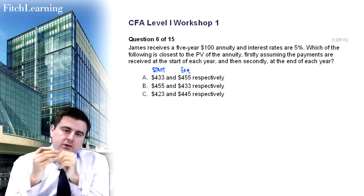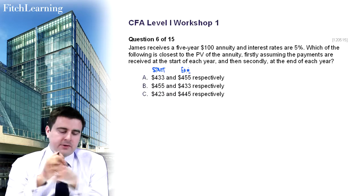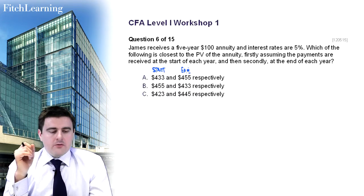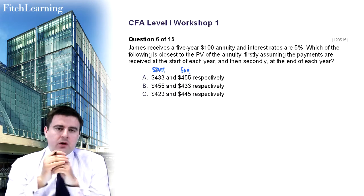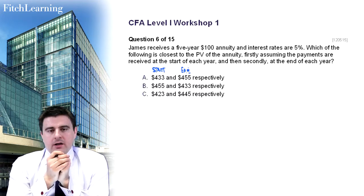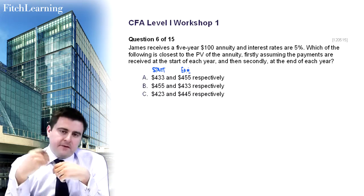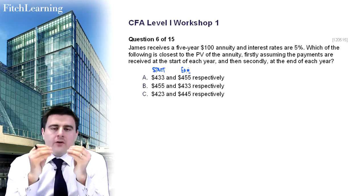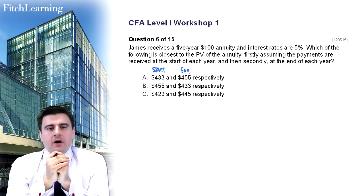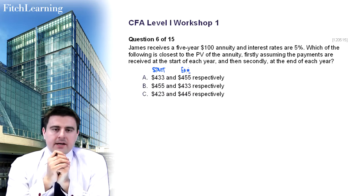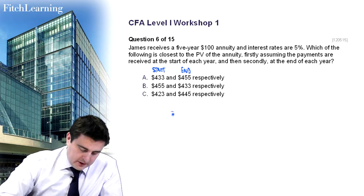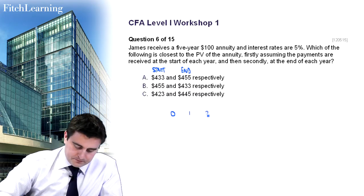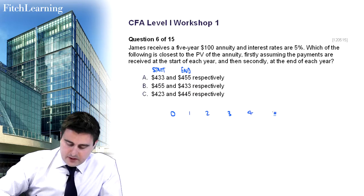So we've got two different assumptions as to how we receive these payments. Now, remember, how does this work? Well, an annuity is an instrument that pays you a fixed cash flow for a given or what we call a finite period of time. So in this case, that's going to be over a five-year time period. So one, two, three, four, five.